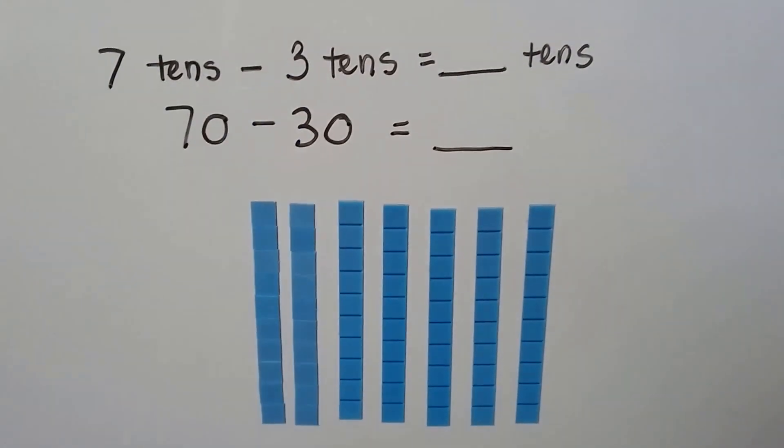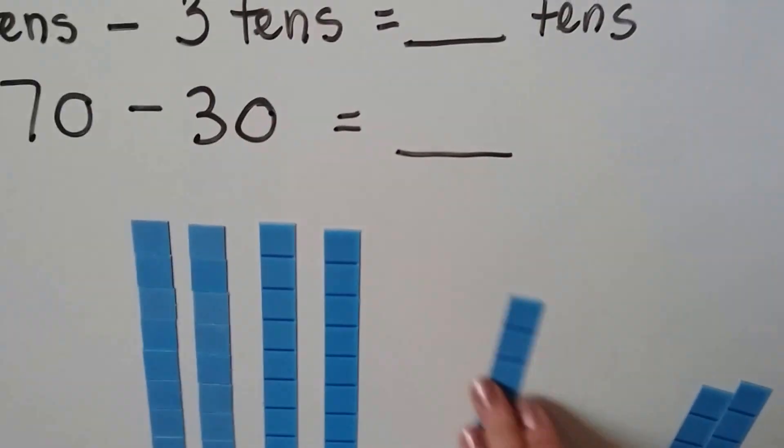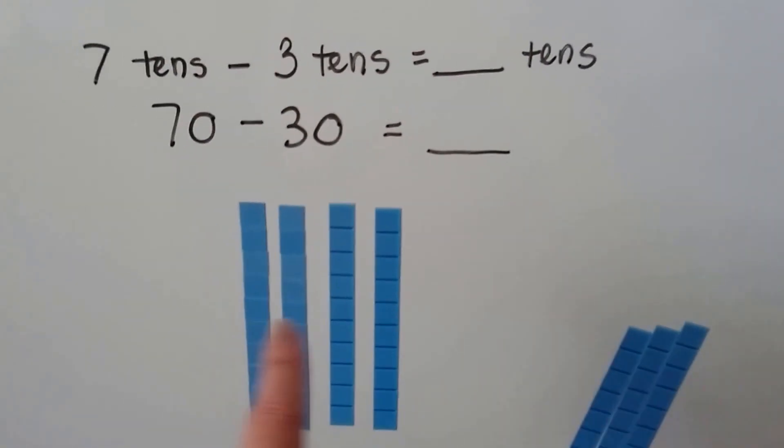We want to take three of them away. One, two, three. That's going to leave four tens.